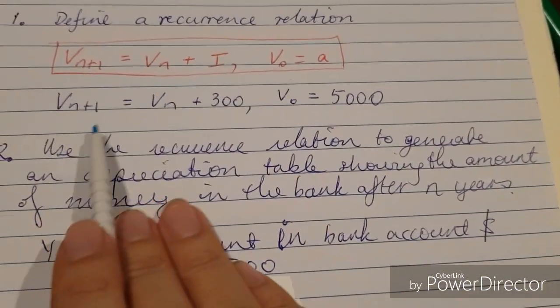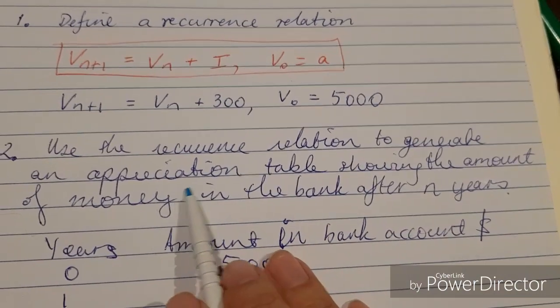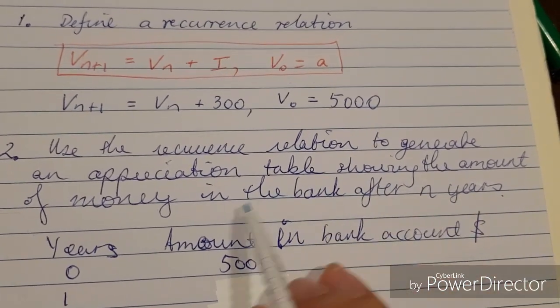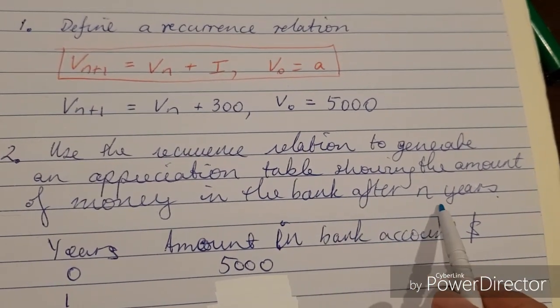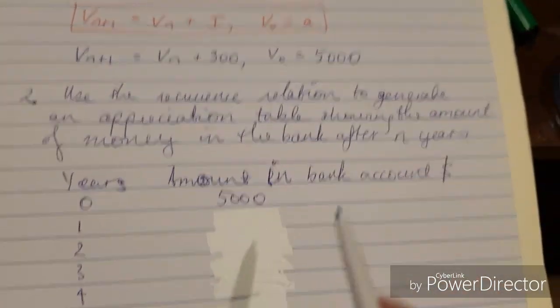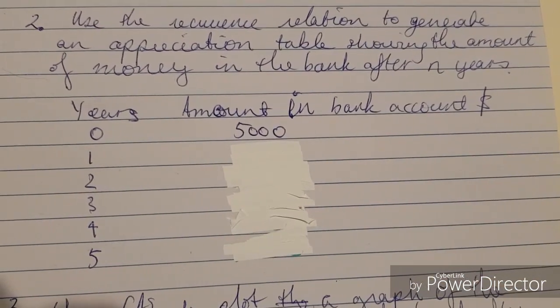Now next part. We want to use this recurrence relation to generate an appreciation table showing the amount of money in the bank after n years. So essentially we want to fill in this table here. Let's go to the CAS calculator.